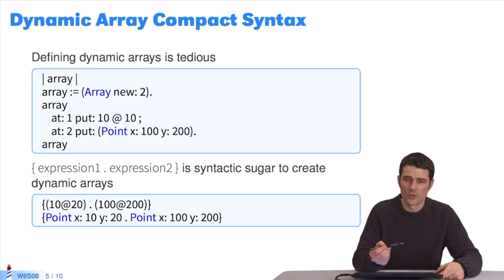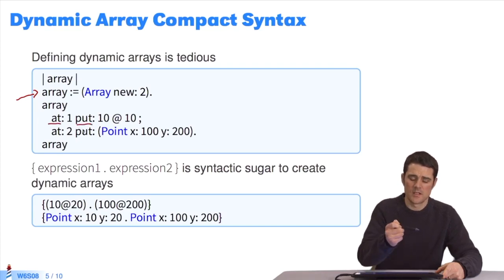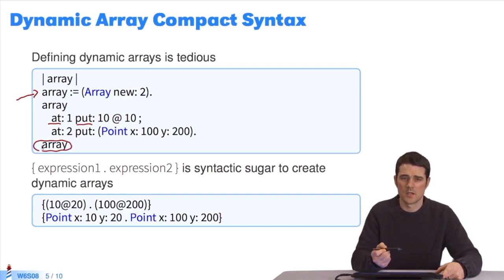This is another version of the dynamic array. I could have created an array manually by sending the message new to the array class. Then I would have used at and put to fill in the array. And then return the array. This is another way to create a dynamic array.